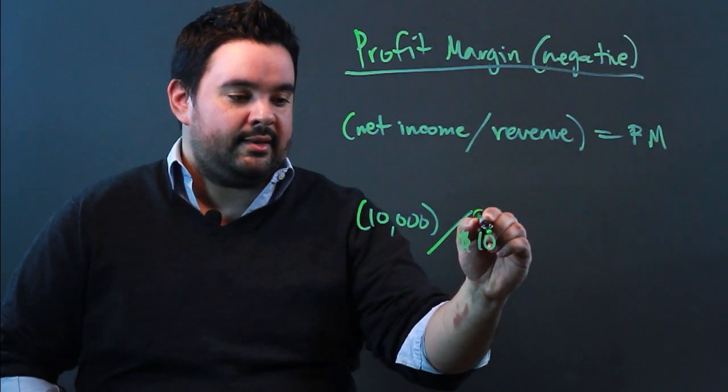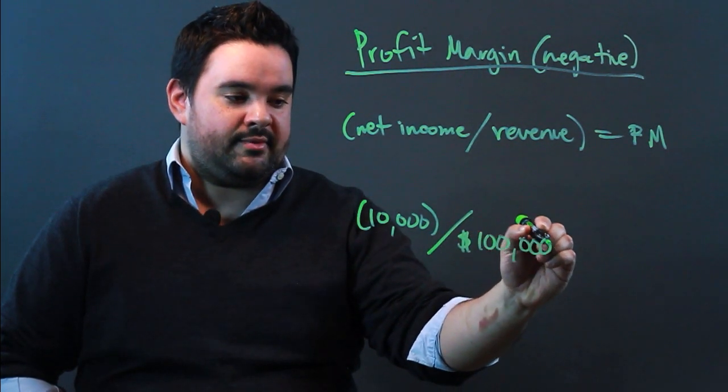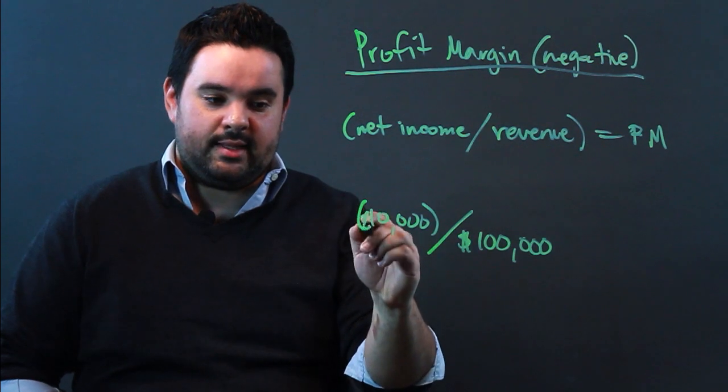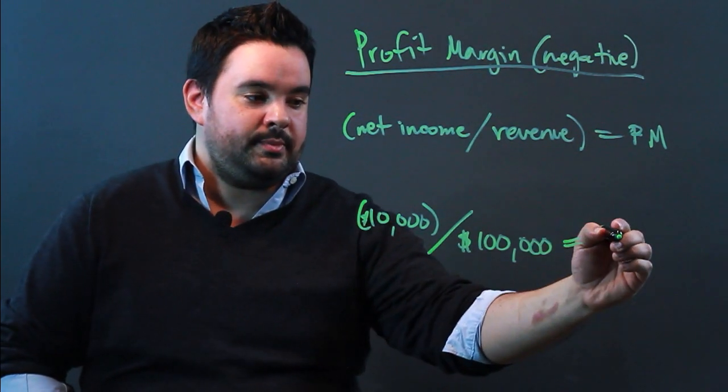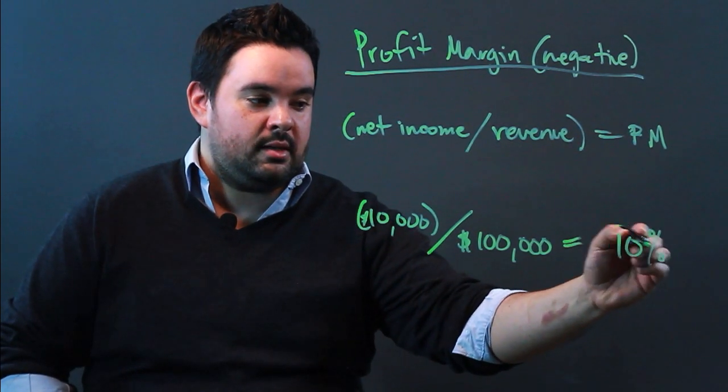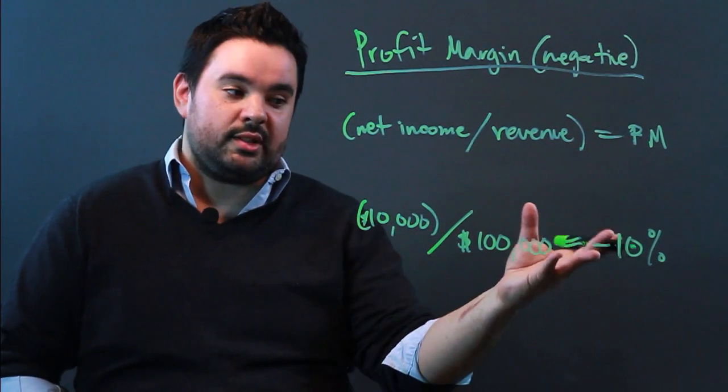So you brought in a positive $100,000, but after you paid everything out, you're actually left with a loss of $10,000. So what is your profit margin? It's actually going to be a negative 10%. So you've actually lost money in the long term, and that's how you get a negative profit margin.